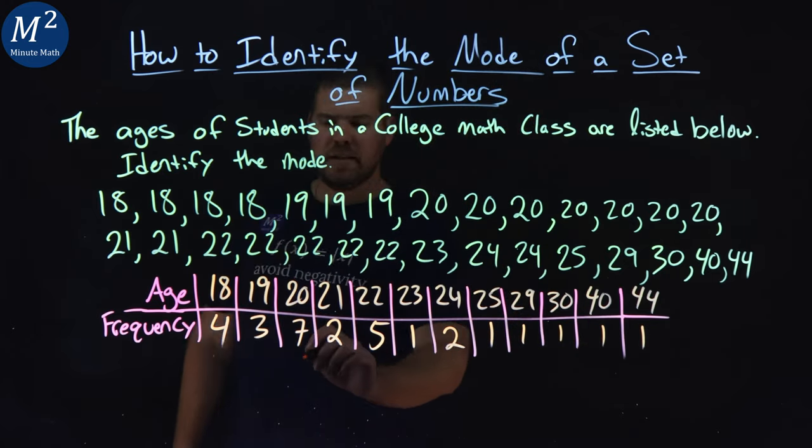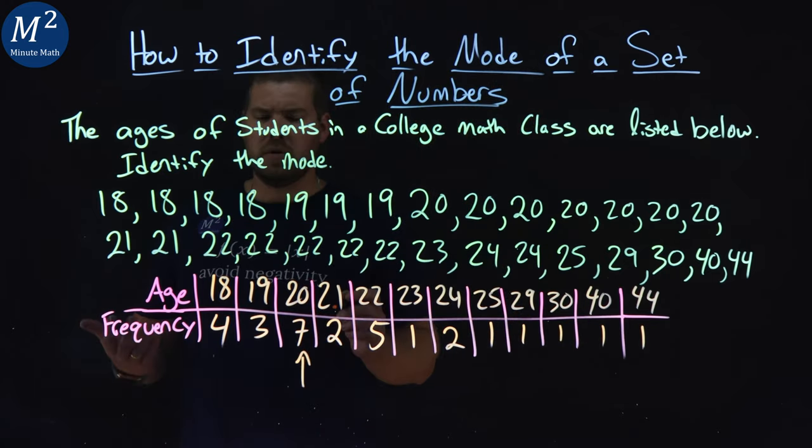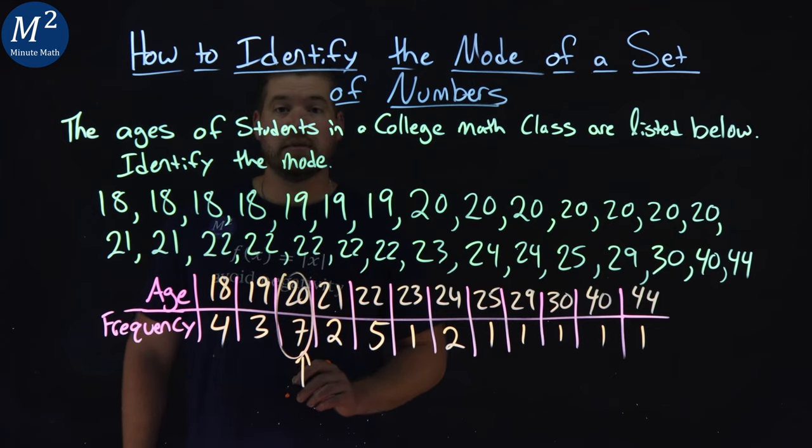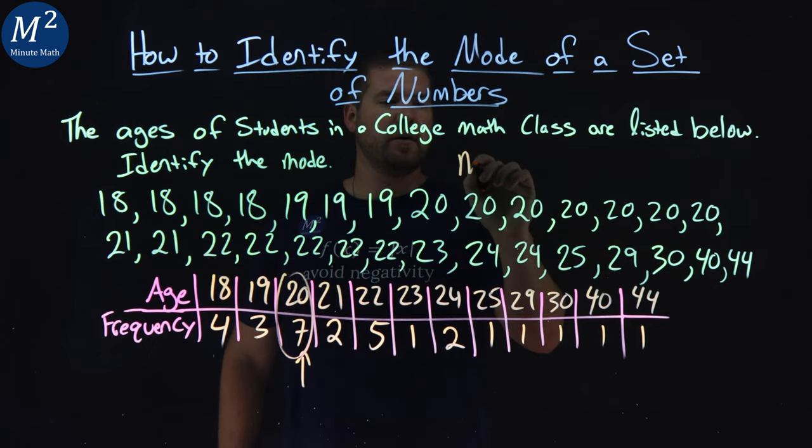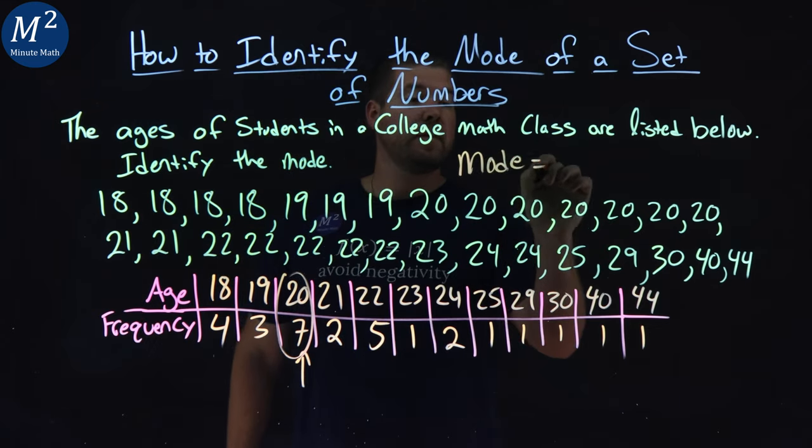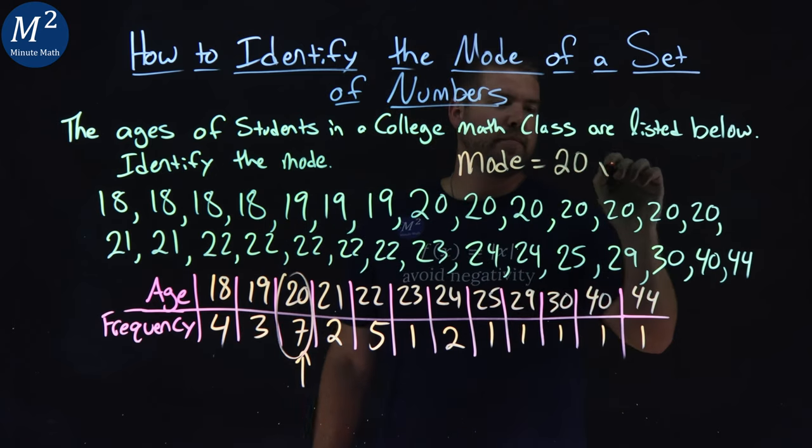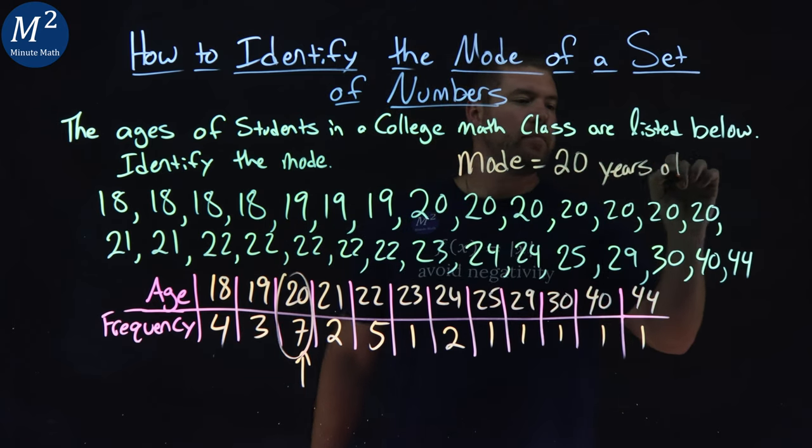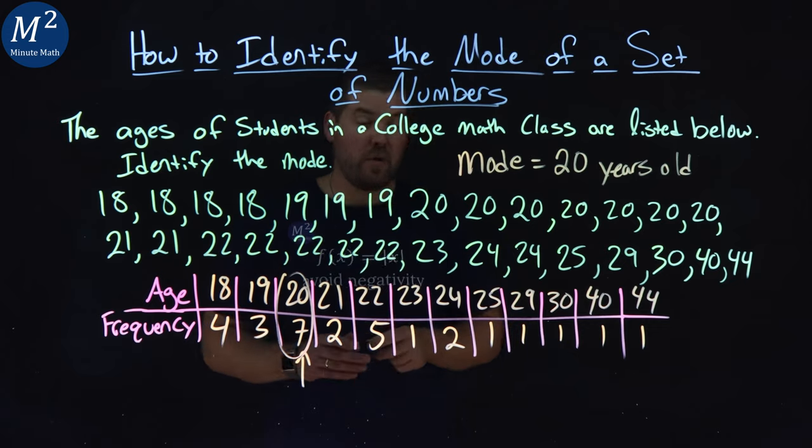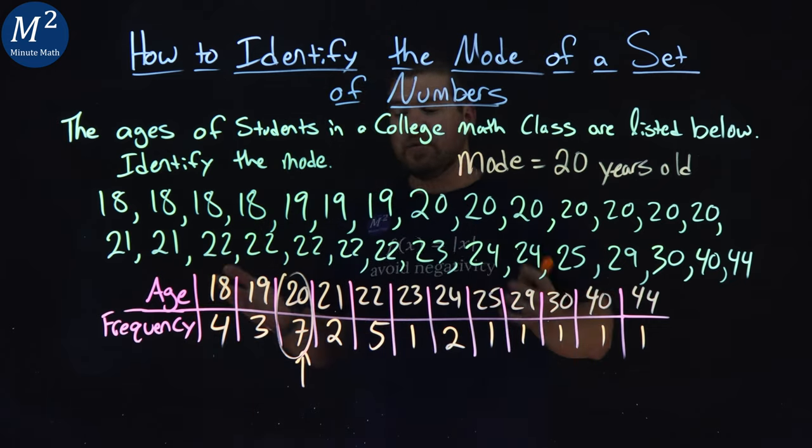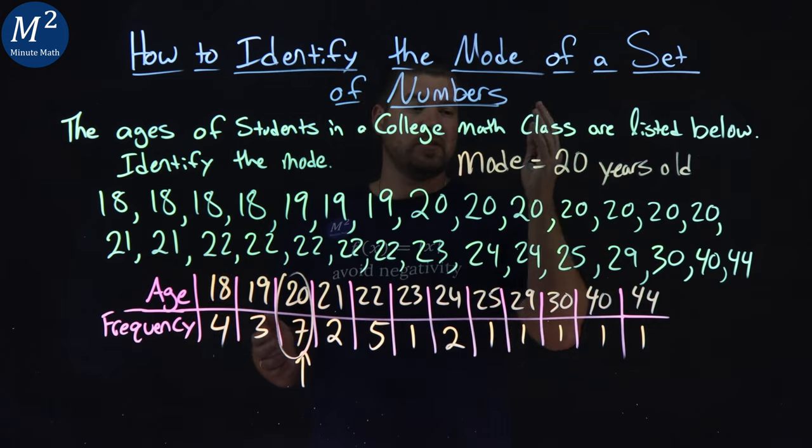So clearly we can see right here, well, the age of 20 happens the most. So the mode here is equal to 20 years old.